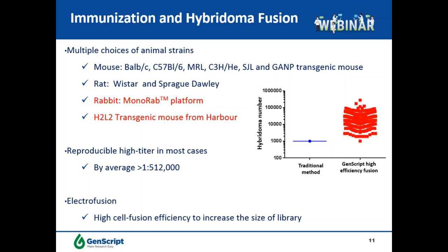After the project is validated on a target basis and immunogens have been prepared, we start immunization and hybridoma fusion. Multiple animal strains are available and in most cases they can reach very high titers, with an average titer of 512K. Based on our experience, SJL mice offer high antibody diversity, and licensed mice are good for generating high-affinity antibodies. Besides mice and rats, we have also established our proprietary MonoRab rabbit monoclonal antibody platform.